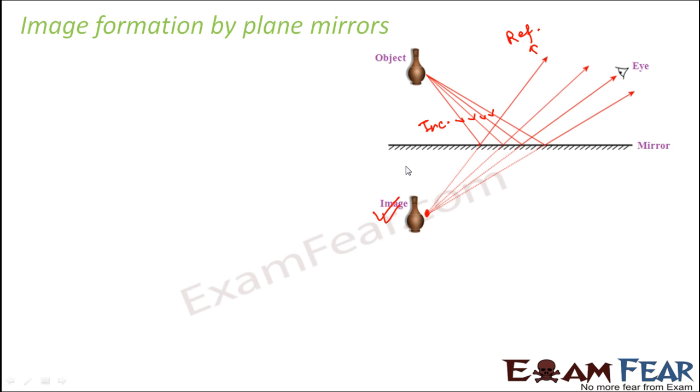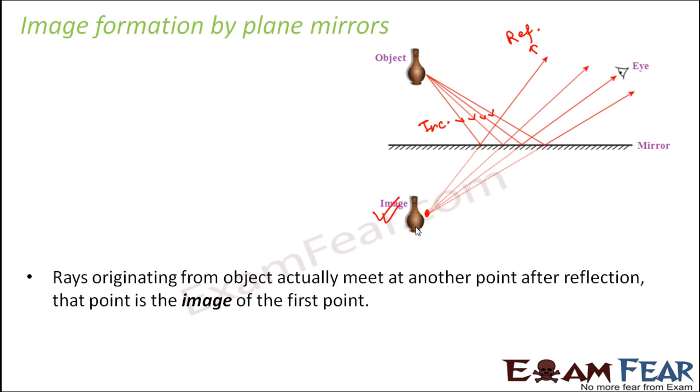Basically the image is always formed at that point where all the reflected rays meet. Either the rays meet really or the rays meet virtually, so that doesn't matter. In this case, if you see on this side, the rays would have never met because they are diverging. They are going away from each other, so they will never meet. But if you extrapolate them on the other side, they could meet at a point. This is the point where image formation happens.